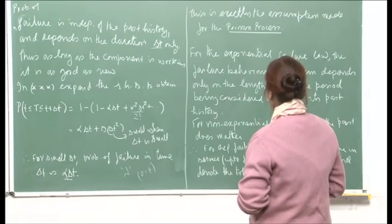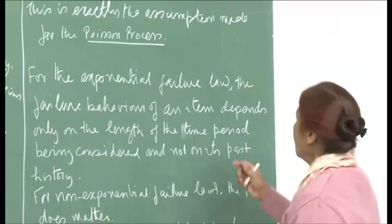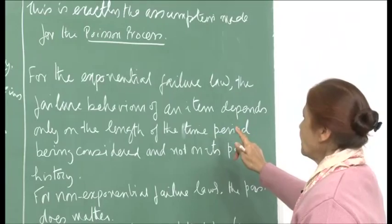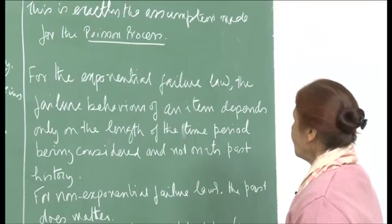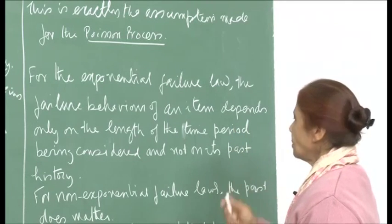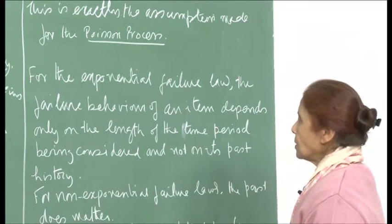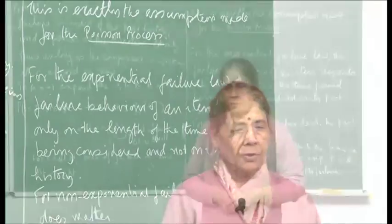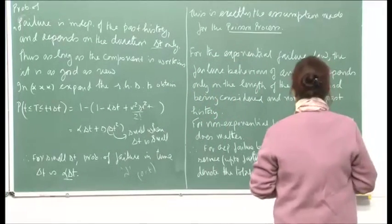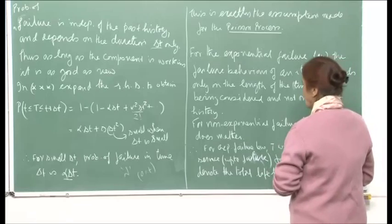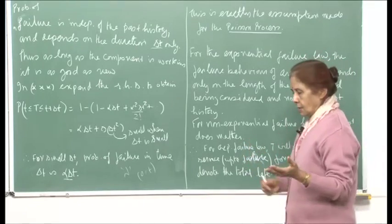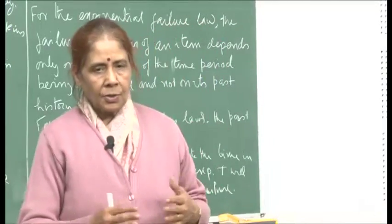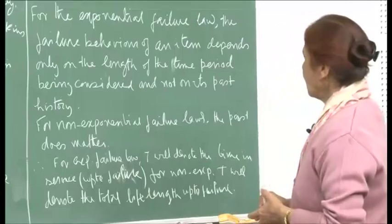For the exponential failure law, the failure behavior of an item depends only on the length of the time period being considered and not on its past history. For non-exponential failure laws — such as the normal failure law we considered — the past does matter. It matters because when a component is under stress, the wearing out effect is there, and it depends on how long the stress has been applied.